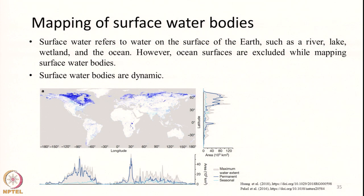The mapping of surface water bodies is one of the vital topics not only for water resource management, but also for environmental monitoring. With rapid urbanization and encroachments, many places are reporting loss of water bodies — lakes are shrinking, the aerial expansion of water bodies is shrinking and so on. Monitoring this is really vital. Surface water refers to what is present on the top surface like rivers, lakes, wetlands, and oceans. Normally oceans will be excluded; our concentration will be on mapping and monitoring inland water bodies.